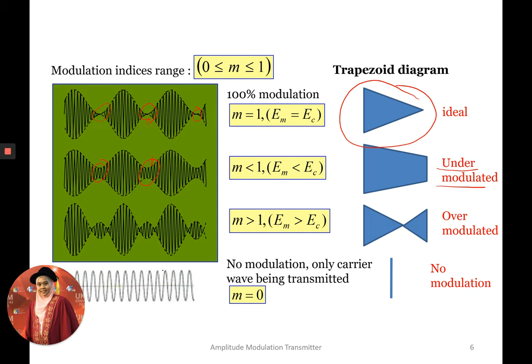When the modulation index is more than 1 — even though the range should be between 0 and 1 — sometimes it can exceed 1. This happens when the modulating signal amplitude is greater than the carrier amplitude. We call this over modulation. On the trapezoid diagram, you get two triangles side by side. On the envelope, there will be an additional small envelope in the middle of the larger envelope.